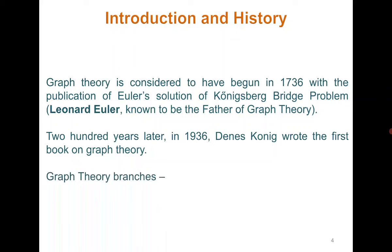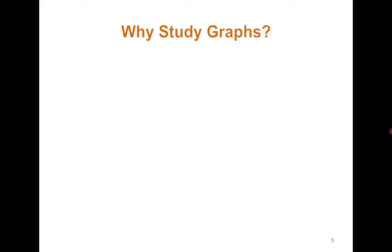Graph theory has mainly three branches: theoretical, algorithmic, and algebraic. The algebraic branch mainly deals with matrices. In this course we are going to see all three aspects of graph theory — theoretical, algorithmic, and algebraic. Now let's see some interesting problems which motivate us to study graphs and how problems can be easily solved when modeled using graph theory.